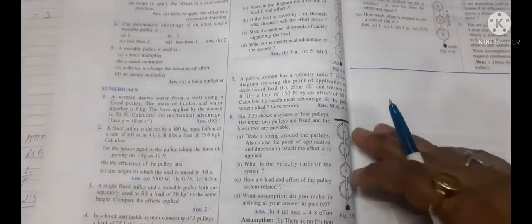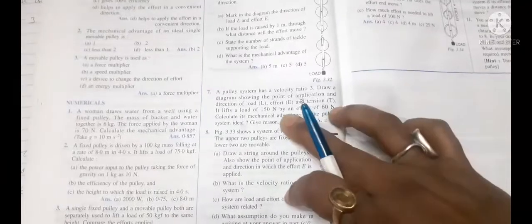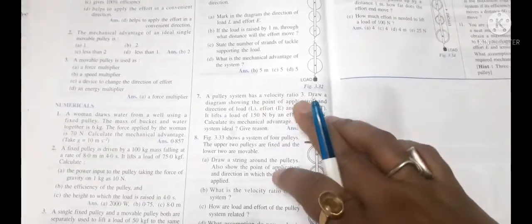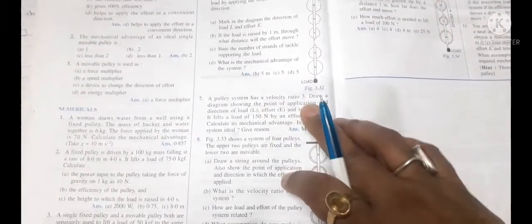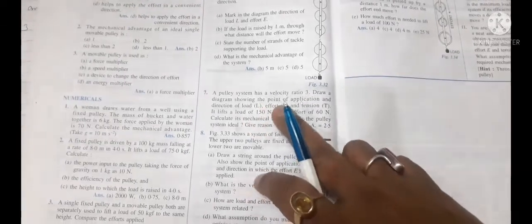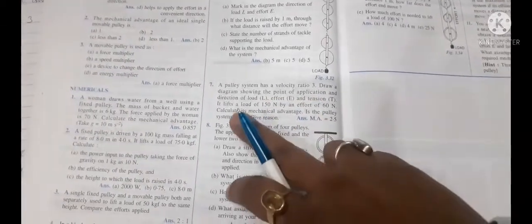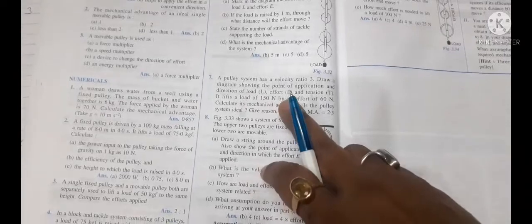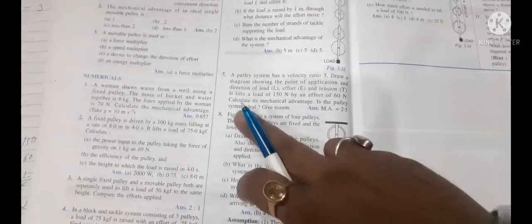Now let's see what is given in question number 7. A pulley system has a velocity ratio 3. Draw a diagram showing the point of application and direction of load L, effort E, and tension T. It lifts a load of 150 newton.